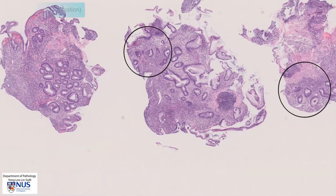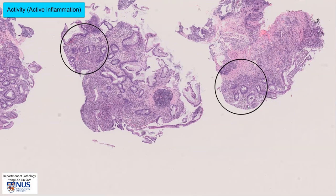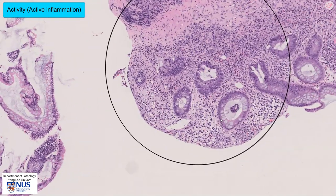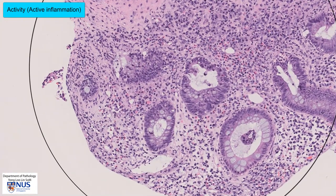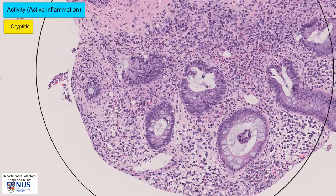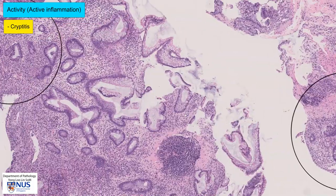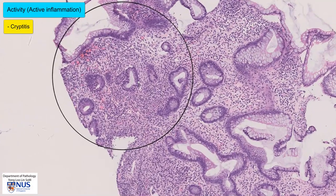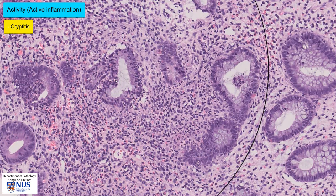Now let's look for some features of active inflammation or of activity. If we look more closely in this area, we can see that there are a few neutrophils infiltrating into the crypt epithelium. This is known as cryptitis and is a feature of activity or active inflammation. We can also see some evidence of cryptitis here with neutrophils infiltrating right into the epithelium of the crypts.